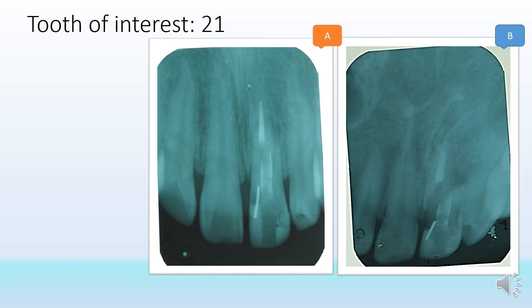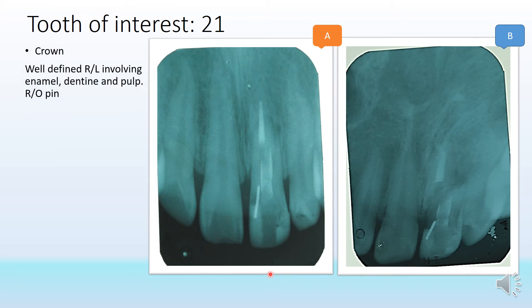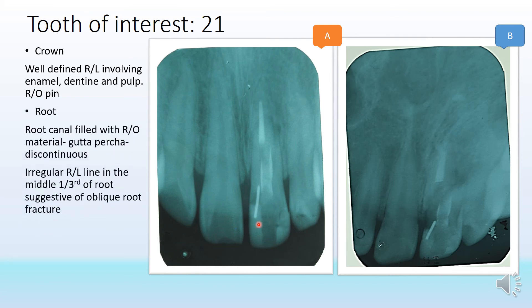The shadow of the nose is visible in image A but not clearly in image B. The tooth of interest is evidently 2-1. The crown shows a well-defined radiolucency involving the enamel, dentine, and pulp. There is also a radiolucent-radiopaque pin visible, generally placed for retentive purposes, along with radio-opacity indicating restorative material on the crown.